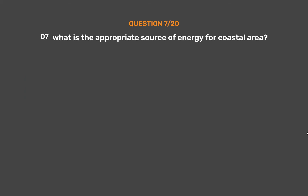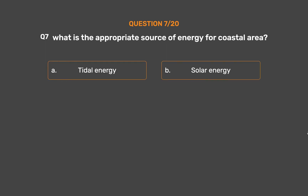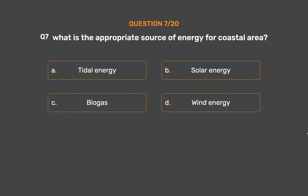Question 7: What is the appropriate source of energy for coastal areas? Option A: Tidal energy. Option B: Solar energy. Option C: Biogas. Option D: Wind energy.